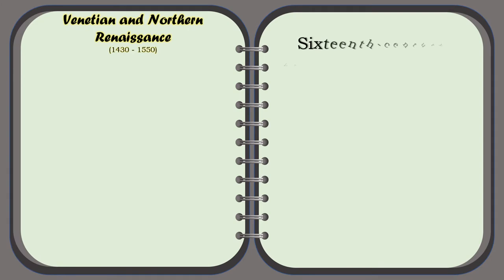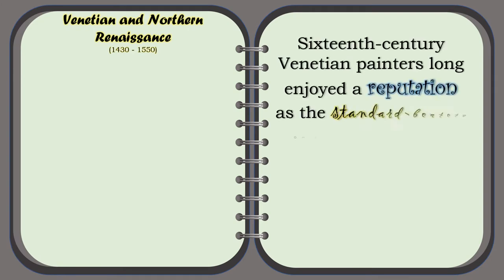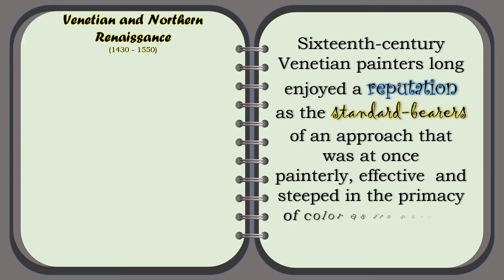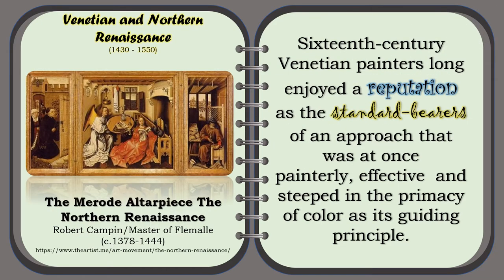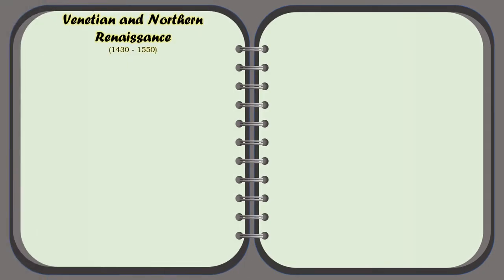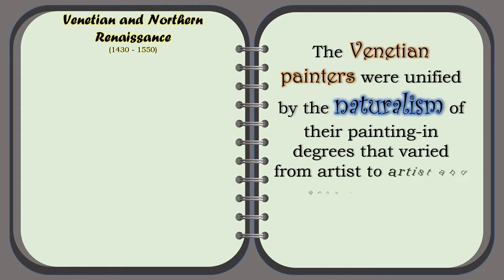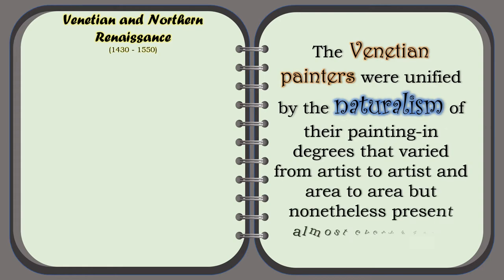16th century Venetian painters long enjoyed a reputation as the standard bearers of an approach that was at once painterly, affective, and steeped in the primacy of color as its guiding principle. For example, the Mérode Altarpiece of the Northern Renaissance by Robert Campin, Master of Flémalle. The Venetian painters were unified by the naturalism of their painting in degrees that varied from artist to artist and area to area, but nonetheless present almost everywhere.